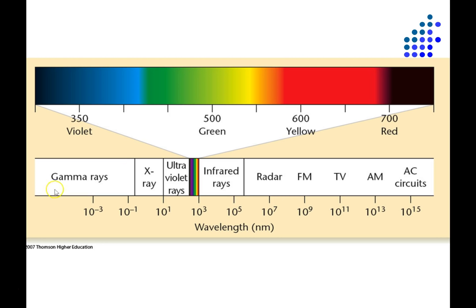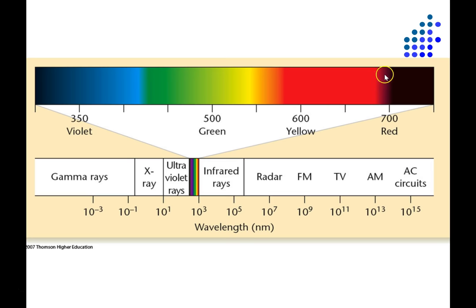The sun emits a really wide range of electromagnetic energy, all the way from gamma rays, which have very, very short wavelengths, onto x-rays, ultraviolet rays, and then this narrow band shows the wavelengths of electromagnetic energy that our eyes happen to be sensitive to. The range is from about 350 or 400 nanometers to about 700 nanometers.